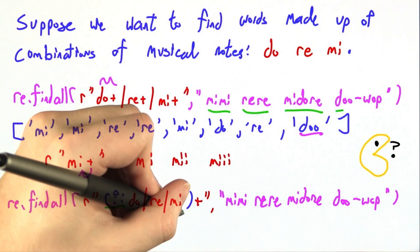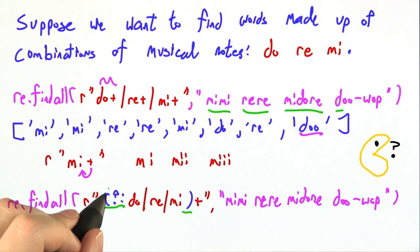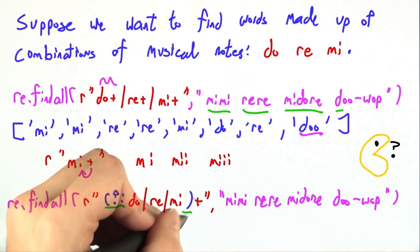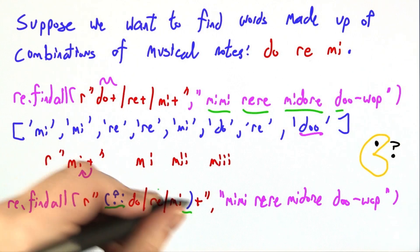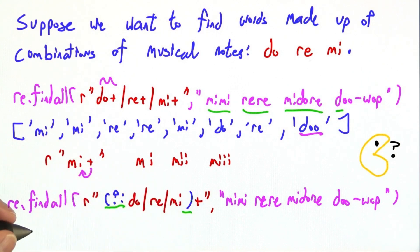Note our use of the parentheses in regular expressions. Open parentheses, question mark, colon marks the beginning of such a group, closing parentheses. And then here in the middle, we have do, re, mi. Anything inside this group can be repeated one or more times. This gets us just the answer we were looking for.